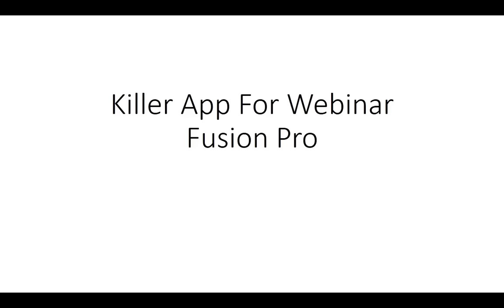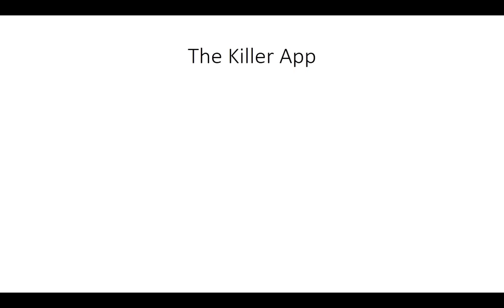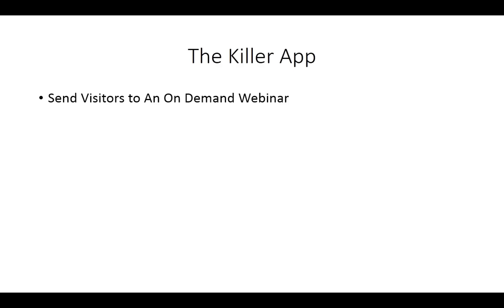Hello and welcome. In this video I'm going to be telling you about the killer application of Webinar Fusion Pro. In order to do this, you are going to need the automated feature inside of Webinar Fusion Pro, or the automated edition. What you're doing is you're going to be sending visitors to an on-demand webinar — they're going to click a link and literally show up on a webinar that's going to start in 13 seconds. That's going to give you a lot of options, which I'm going to tell you about in this video.